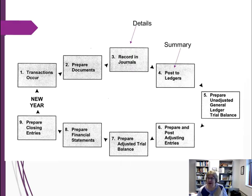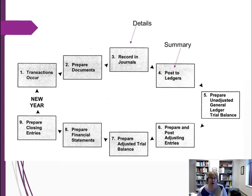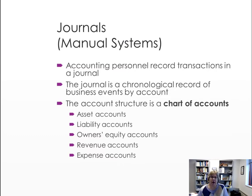We then summarize that information and post to the ledgers. At month end, when everything is complete, we have an unadjusted trial balance — the balances of every account in the general ledger before any adjusting entries. We then make our adjusting entries at month end and additional ones at year end, and prepare the adjusted trial balance. Once reviewed, we prepare the financial statements.